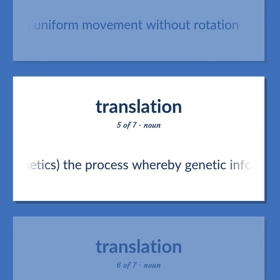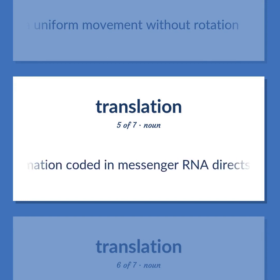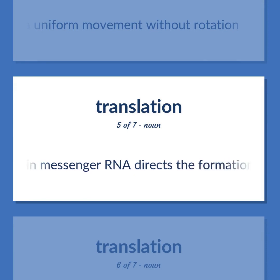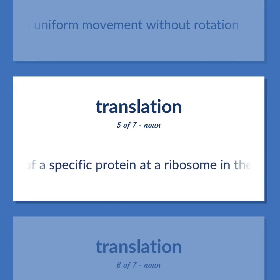Translation (Genetics): The process whereby genetic information coded in messenger RNA directs the formation of a specific protein at a ribosome in the cytoplasm.